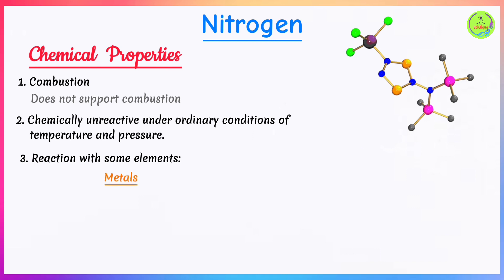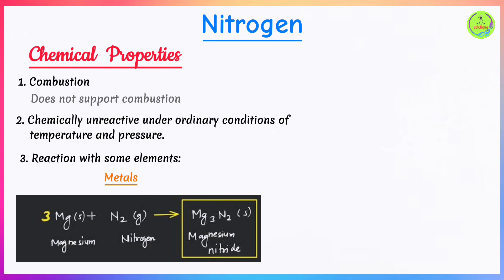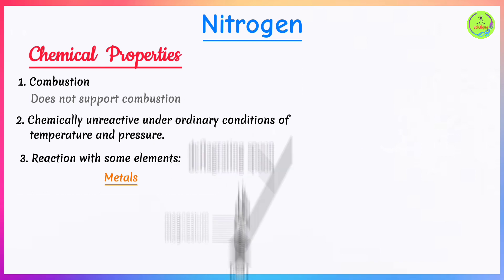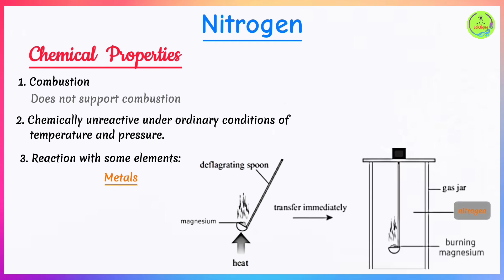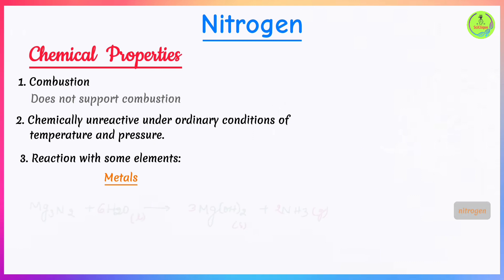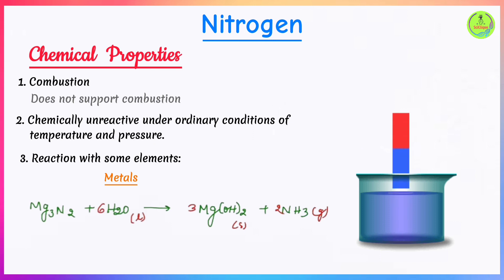Nitrogen also reacts with highly reactive metals, mostly from Group 1 and Group 2. When these metals are heated in the presence of nitrogen, they form metal nitrides — for example, sodium forms sodium nitride, magnesium forms magnesium nitride, and calcium forms calcium nitride. If magnesium nitride is then added to water, it reacts to produce ammonia gas and magnesium hydroxide.